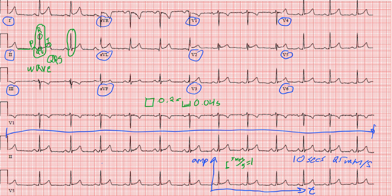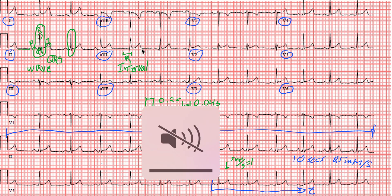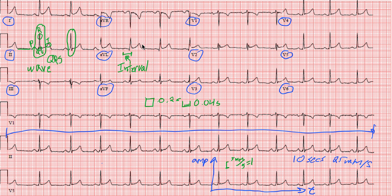The next definition is an interval. An interval is simply the time between two different events or waves. For example, from the start of the P wave all the way to the R wave is known as the PR interval. These are important because they tell you how fast the different parts of the heart are depolarizing. Another interval we often talk about is the QT interval — from the Q wave out to the T wave. In future videos, we'll talk about what these intervals are supposed to look like and what it means when they're short, long, or even absent.